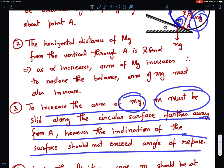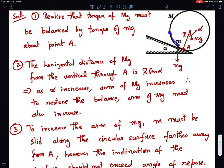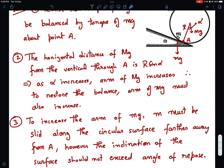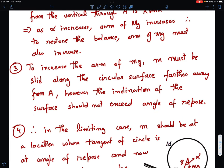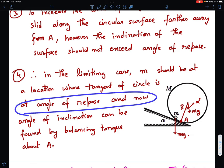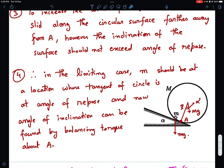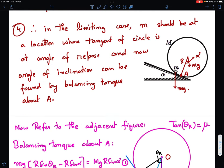So maximum you can take M away in such a way that the tangent of the circle is at the angle of repose from the horizontal. So to increase the arm of small mg, M must be slid along the circular surface farther away from A. However, the inclination of surface should not exceed the angle of repose. So we'll have to move this along the circle until this is at the angle of repose. That's the limiting case for the maximum inclination. These things we have to keep in mind.